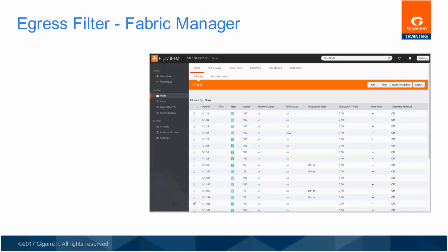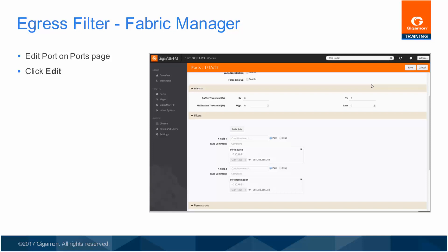Egress filters are set on a per-port basis. Edit port 15 on the ports screen. Select port 1,1,X15 and click edit. The port page for port 1,1,X15 appears. Click the add a rule button on the edit screen for port 15.